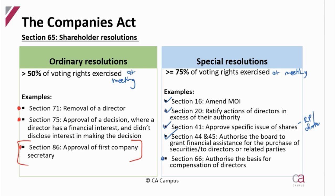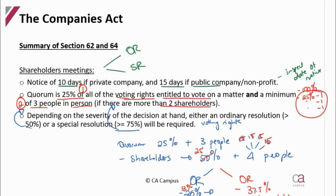We're going to get to section 66, which covers directors' remuneration. When you are required to audit the amendments of the memorandum of incorporation, you're going to have to inspect the minutes of meetings to ensure that notice was given — 10 days before the meeting if private, or 15 days if public. Inspect the minutes to ensure the quorum was present: more than 25% of voting rights were present and 3 or more persons were there.